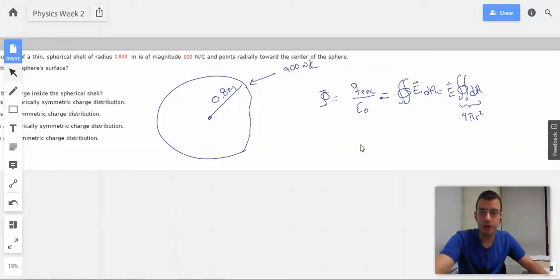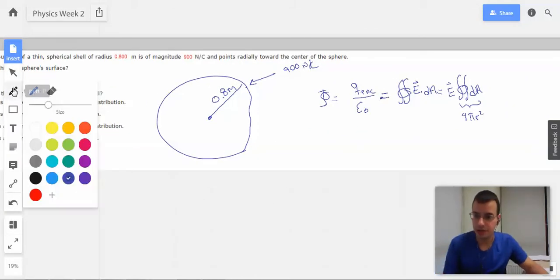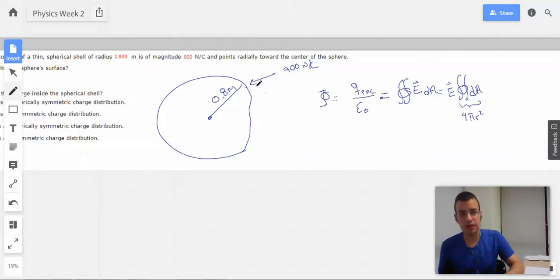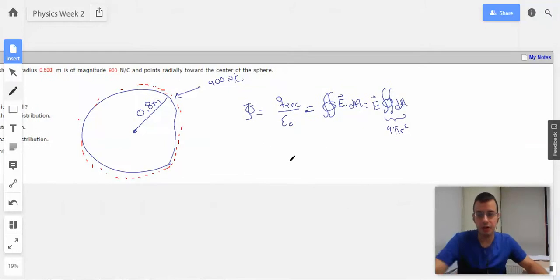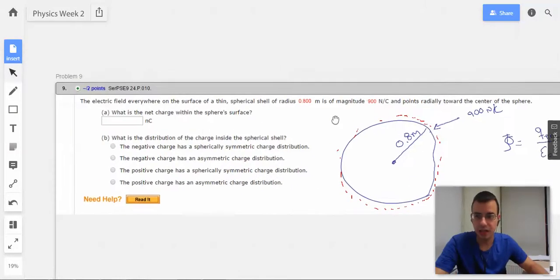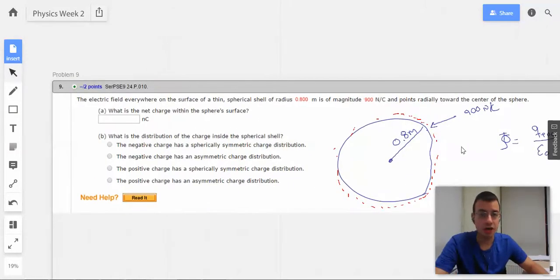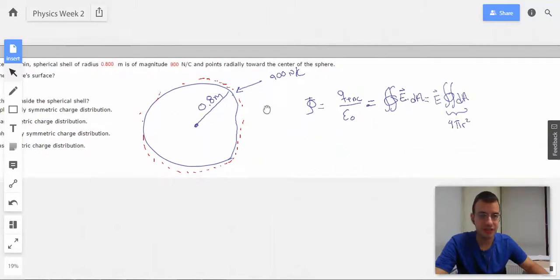So, we're going to draw a Gaussian surface. And the way we're going to draw it, we're just going to draw it around the—let's see, what are we trying to find? Oh, we're trying to find Q enclosed. Right around the surface. So, it's just on top of the surface here. This is going to be our Gaussian sphere.